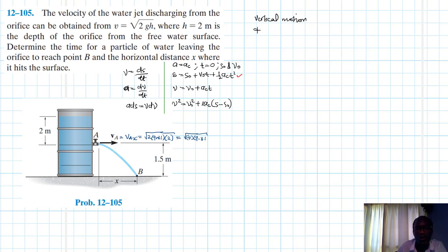Vertical motion: we are using s is equal to s naught plus v naught t plus half ac t squared. Our s in our case here is equal to zero, our s naught is equal to 1.5.